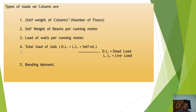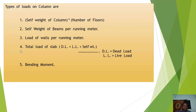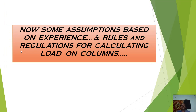There are five types of loads on a column. First is the self weight of the column — self weight multiplied by number of floors gives the load. Second is the self weight of beam per running meter. In RCC, load transfers from slab to beam, beam to column, and column to footing. Third is loads of walls per running meter. Fourth is the total load of slab — dead load plus live load plus self weight. Fifth is the bending moment.